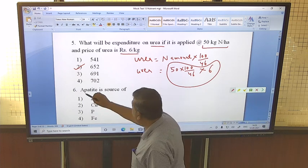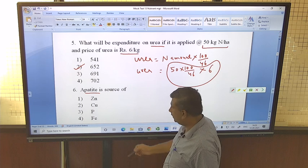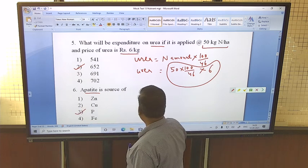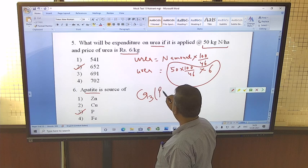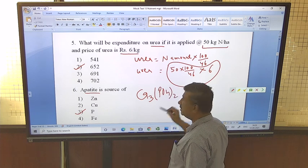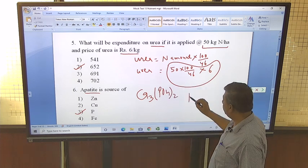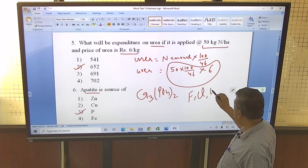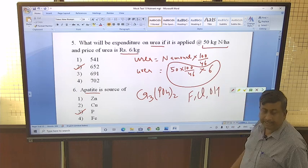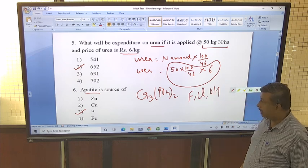Then, apatite is source of - this is source of phosphorus. Actually, apatite formula is Ca3(PO4)2, and there are fluoroapatite, chloroapatite and hydroxyapatite. These are very common apatites.